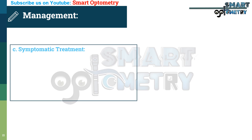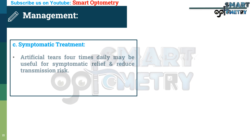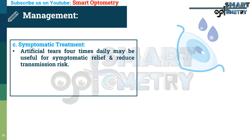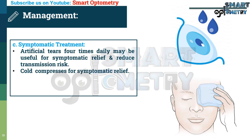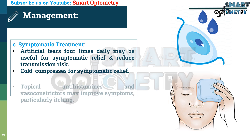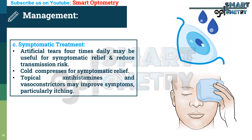C — Symptomatic treatment: artificial tears 4 times daily may be useful for symptomatic relief and to reduce transmission risk. Cold compresses for symptomatic relief. Topical antihistamines and vasoconstrictors may improve symptoms, particularly itching.